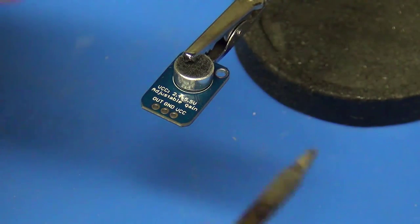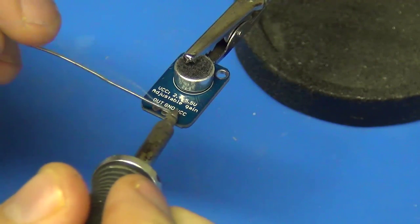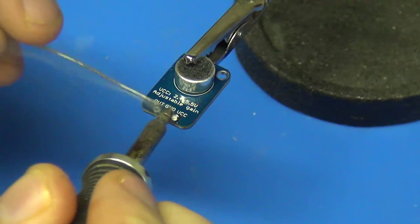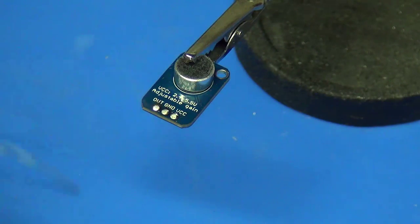Now we're going to solder the wires to this sensor. I find it easier to apply the solder on these smaller sensors first, and then solder the wires on.